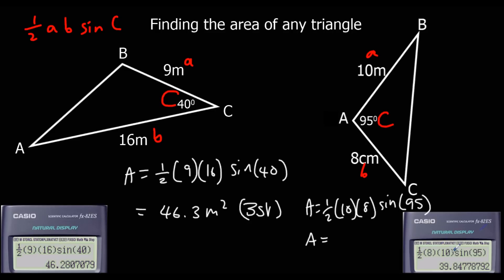See I've put the 10 and the 8 the other way around. It doesn't make a difference which ones a and b are. It gives the answer of 39.8 centimeters squared to three significant figures.